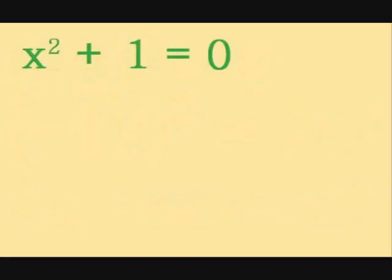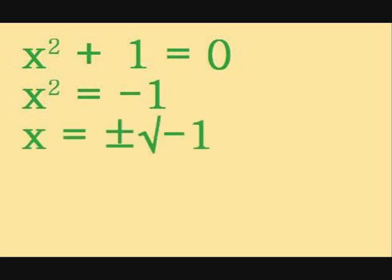This is a bit annoying in the context of quadratic equations. Take this example: x squared plus 1 equals 0. Let's try solving it for x. We subtract 1 from both sides to get x squared equals minus 1, and then we square root both sides to get x equals plus or minus the square root of minus 1. However, we've been told that we can't square root a negative number. So, how do we advance from here?